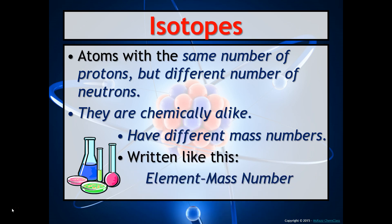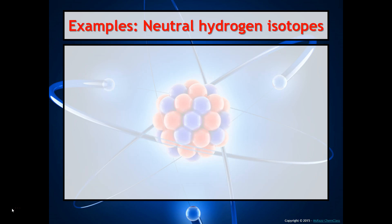Whenever you write the name of an isotope, you always write the element name, a dash, and the mass number. For example, these are all neutral hydrogen isotopes — neutral means protons must equal electrons. There are three major isotopes of hydrogen: hydrogen-1, hydrogen-2, and hydrogen-3.